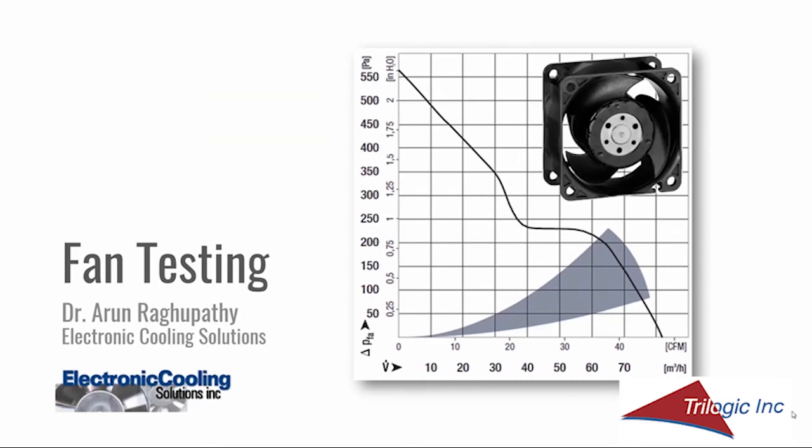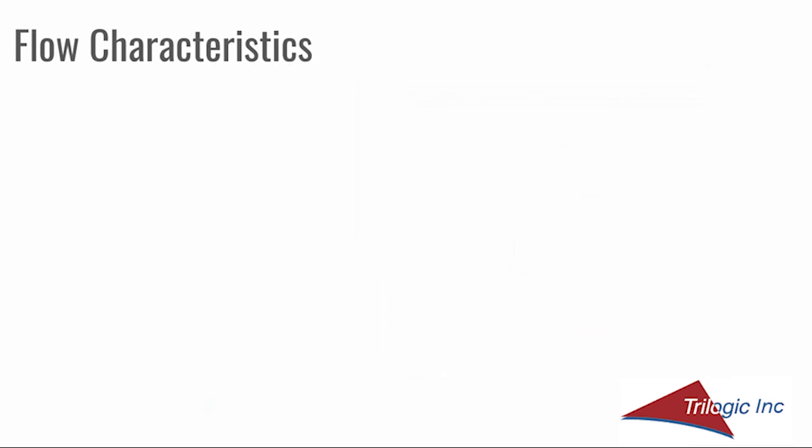With that, this section on fan testing is complete. Thank you. We've talked about how air moves axially or radially from a fan and how that may influence design decisions, and we have also looked at fan curves and how they are experimentally determined. I'd like to next look at the exit flow characteristics of the various air movers before we discuss the different modeling methodologies.